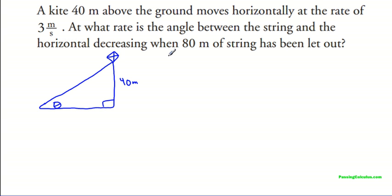What else do we have? It's moving horizontally, so I'm going to call this x. So dx/dt is equal to 3 meters per second. And we have 80 meters of string let out. So it's important to recognize that this 80 is not fixed. This 40 is fixed. The height of the kite is always 40 for the question. So there's a very important distinction to make between those two. This length is changing whereas this is fixed.